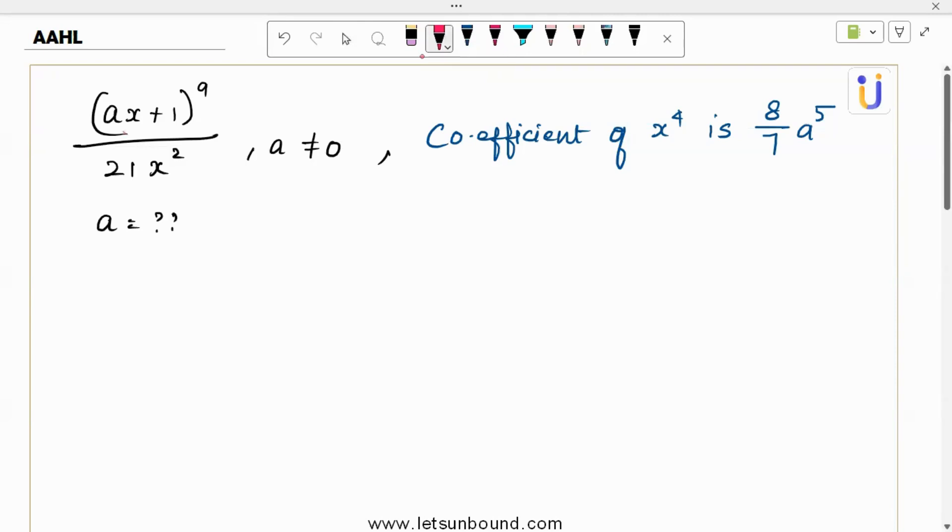So first let's write the general term for binomial expansion. T_r+1 is nCr, a power n minus r, b power r. This is the general term if your expansion is a plus b the whole power n. Right? And using this, so what is our first term? First term is a and second term is b and your n is the exponent value. So let's try to simplify this general term.